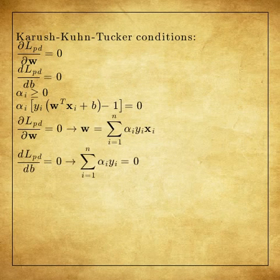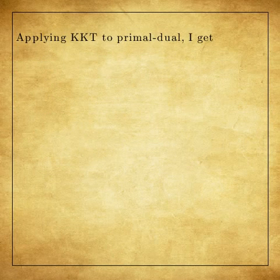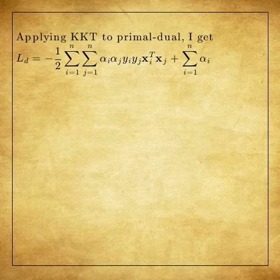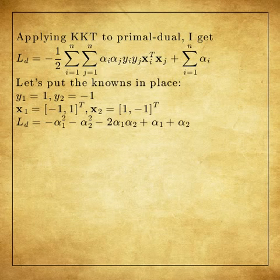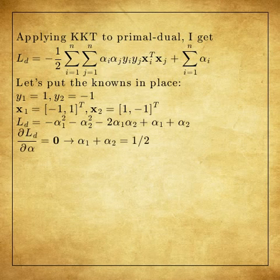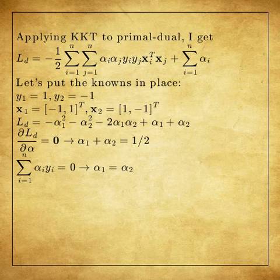If we take the derivatives and plug them into the primal dual form, we get the dual form. If we put the numbers into the dual form, we get a very simple polynomial from which the optimum Lagrange multipliers alpha1 and alpha2 are determined.